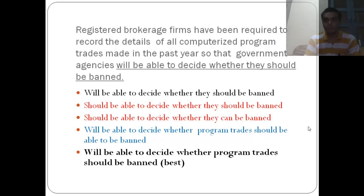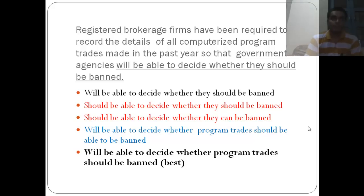Let's look at an example to understand how the GMAT board expects you to remove ambiguity from your language and how to check and remove it. So let's read this example: 'Registered brokerage firms have been required to record the details of all computerized program trades made in the past year so that the government agencies will be able to decide whether they should be banned.'